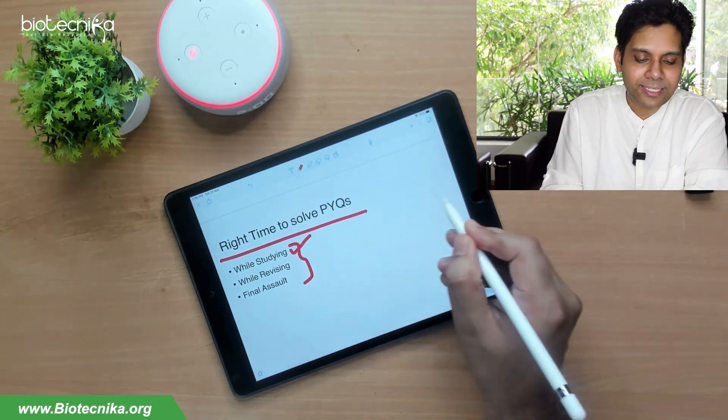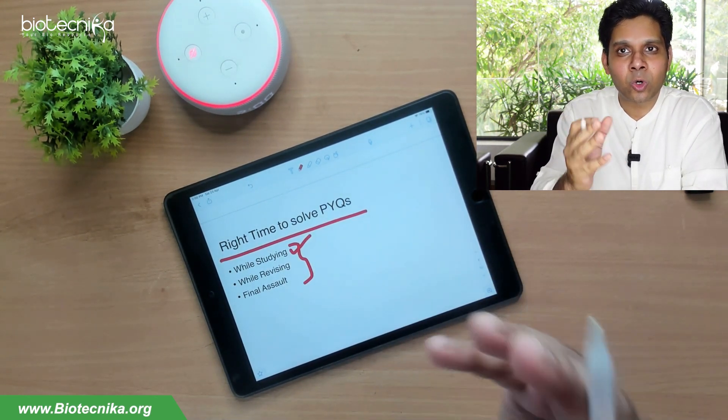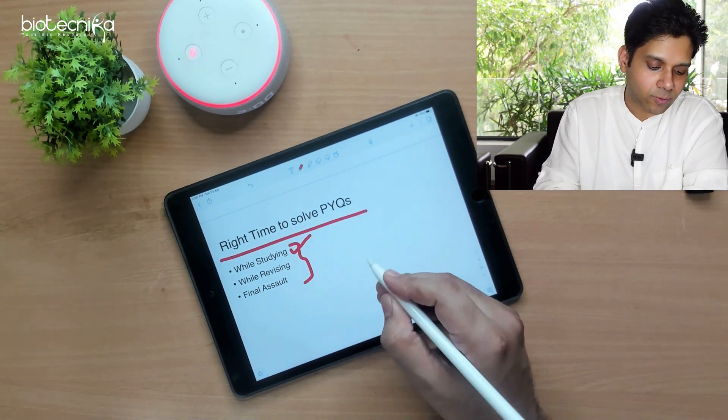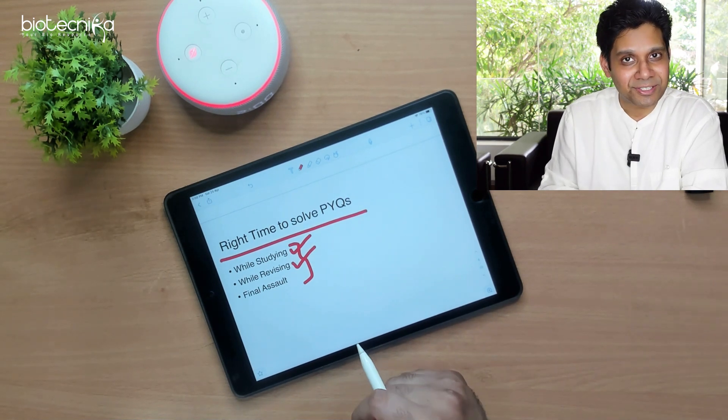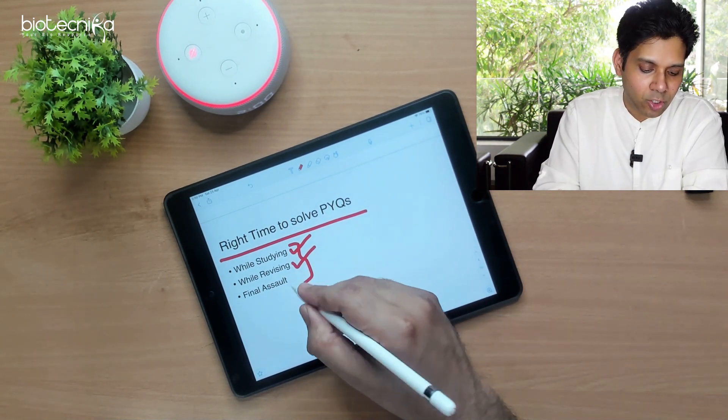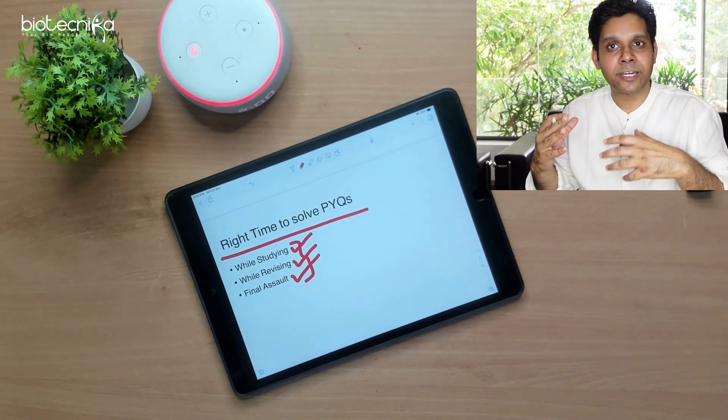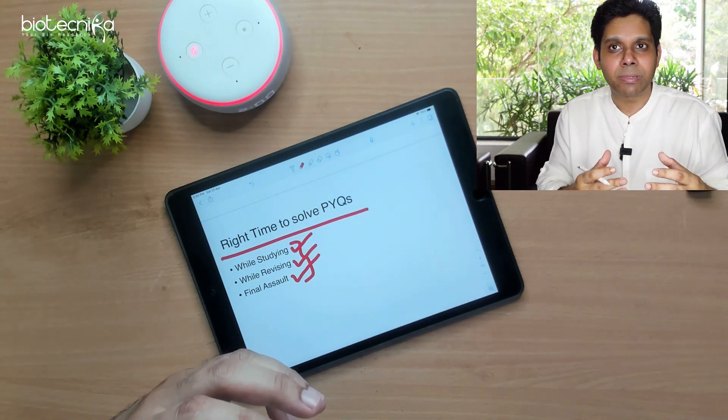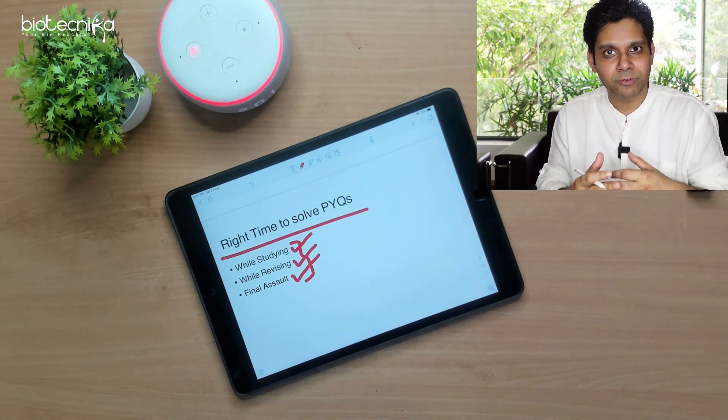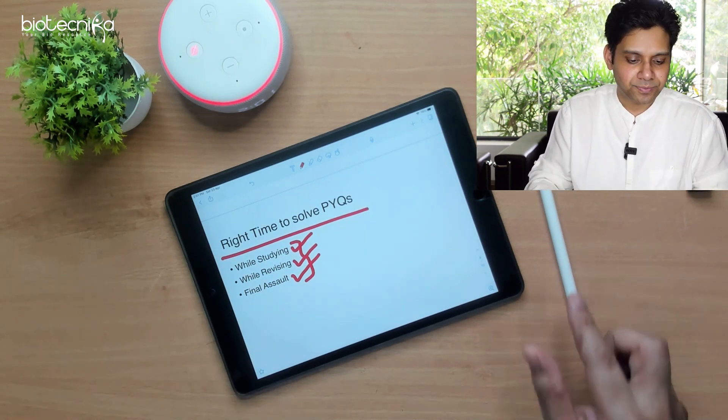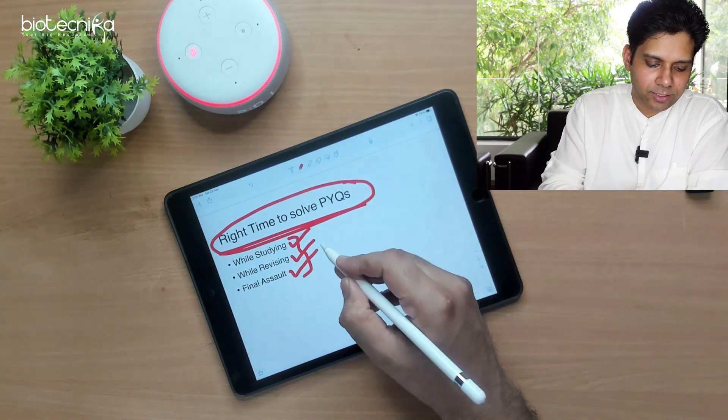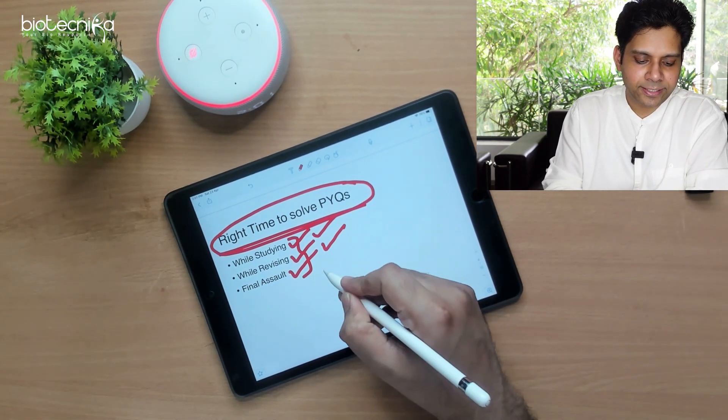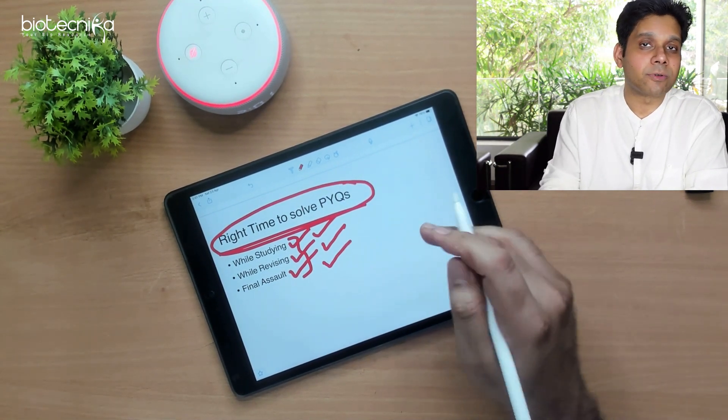The first is while studying. When you are studying, you can also solve the previous question papers. While revising, you can also use it. And then 15 to 20 days before the exam. So the right time to solve the previous question papers is while studying, while revising, and then 15 to 20 days before the exam.